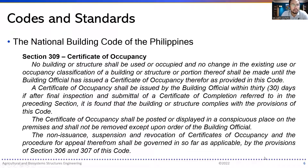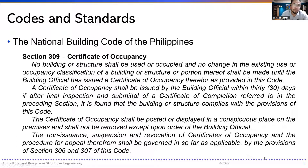As to the certificate of occupancy — Section 309 — the certificate would grant occupants permission to occupy the space. No building or structure shall be used or occupied, and no change in existing use or occupancy classification shall be made, until the building official has issued a certificate of occupancy. A certificate of occupancy shall be issued by the building official within 30 days after final inspection and submittal of a certificate of completion, provided that the building or structure complies with the provisions of this code.